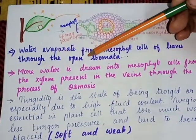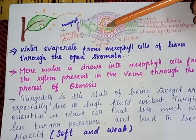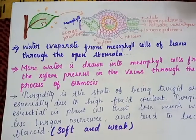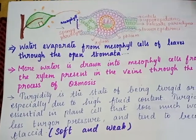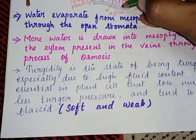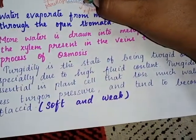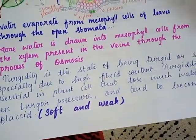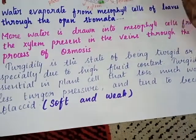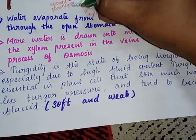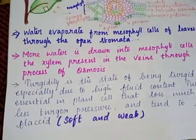Water evaporates from mesophyll cells of leaves through open stomata. Here, stomata are present mainly on the lower epidermis. The upper epidermis has a less number of stomata, and the lower epidermis has more number of stomata.